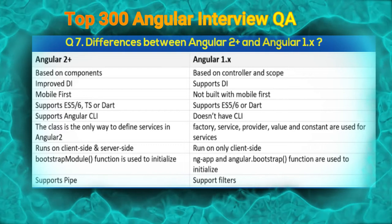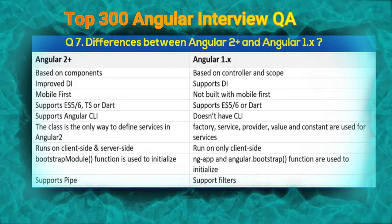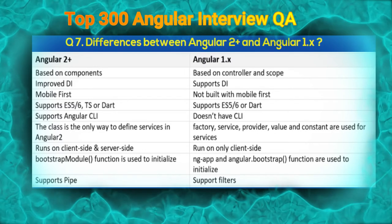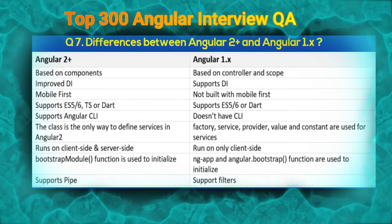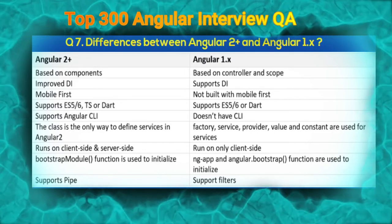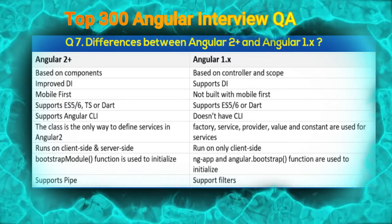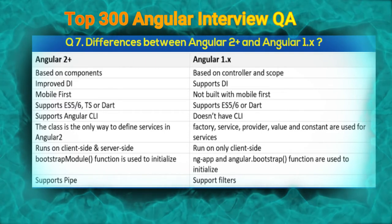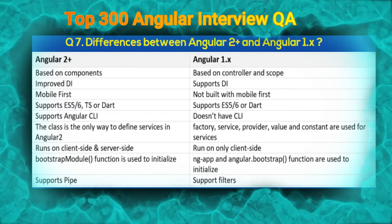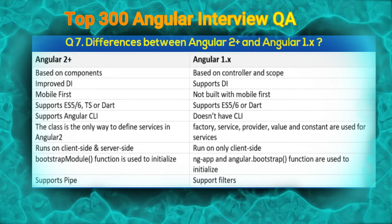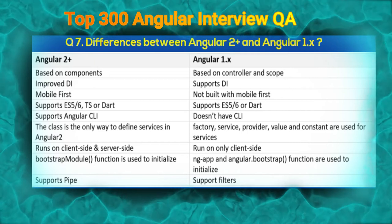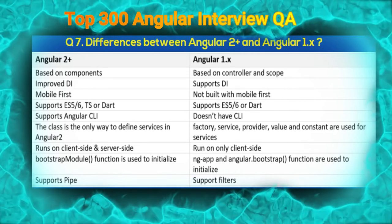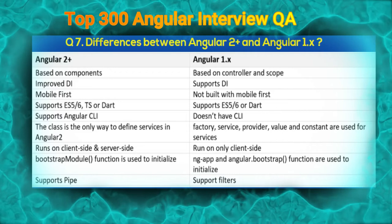In Angular, the class is the only way to define a service. But in AngularJS, there are factory, service, provider, value, and constant which are used for services. Angular runs on both client side and server side, but AngularJS runs only on the client side.